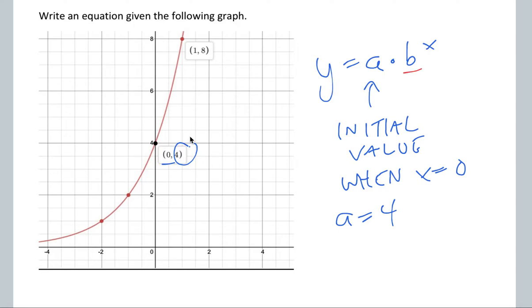Now, our b value is the common rate or what we multiply by from one value to the next. So as you go from x equals 0 to x equals 1, a jump of 1 for x, what happens with the y values? Well, it goes from 4 to 8, which is a rate of times 2.